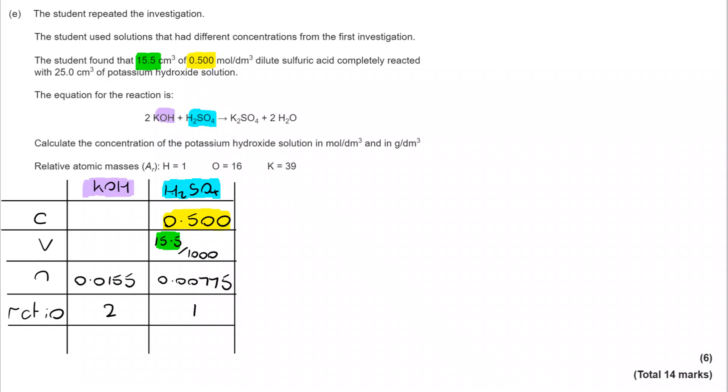Now I also know the volume of potassium hydroxide that was provided in the question. I'm remembering to divide that by a thousand because I need that in decimeters cubed. And I'm then going to use the n is CV triangle. So if n equals C times V, C is n divided by V. I do that and I get 0.62 moles per decimeter cubed.